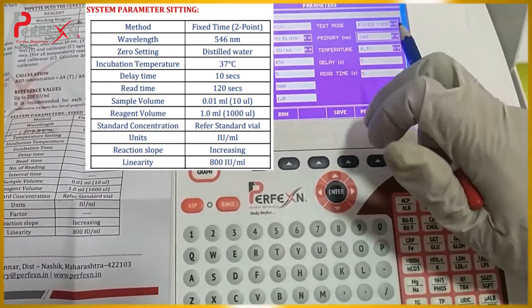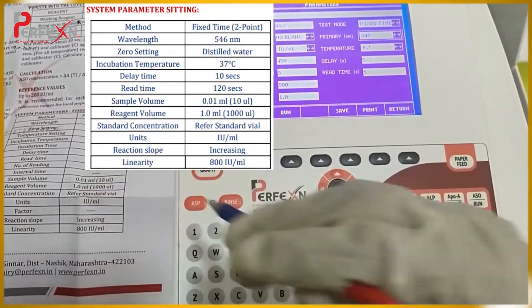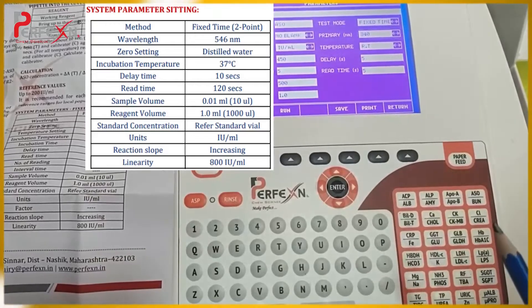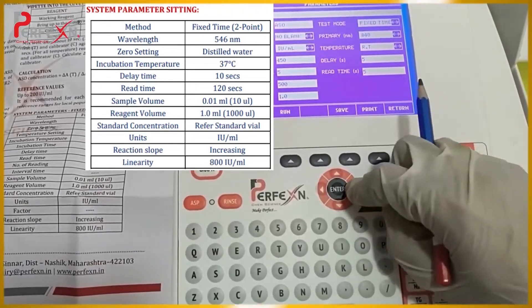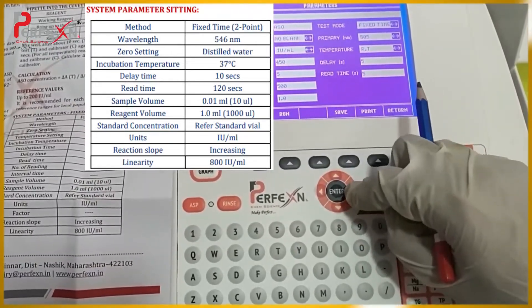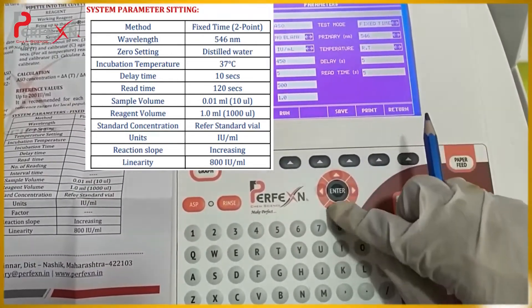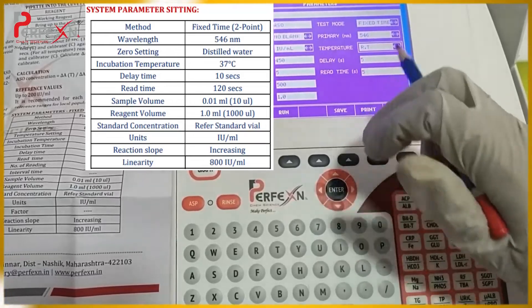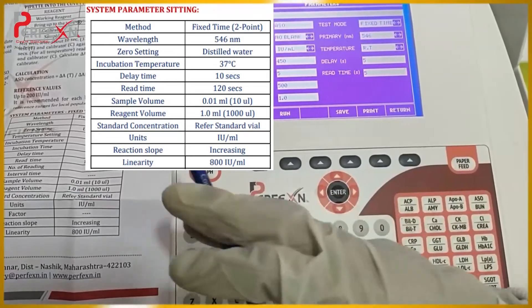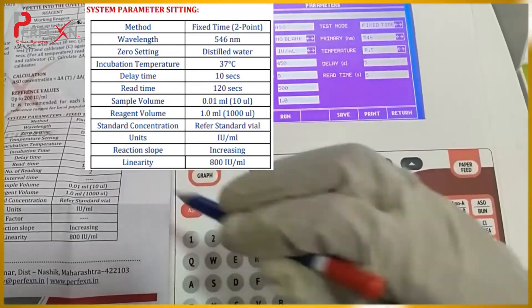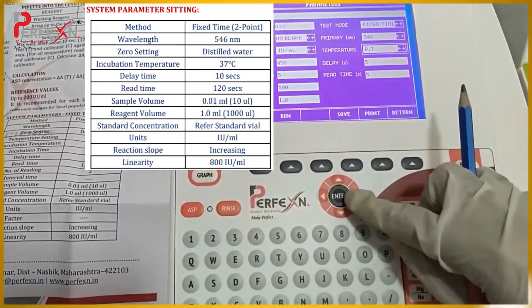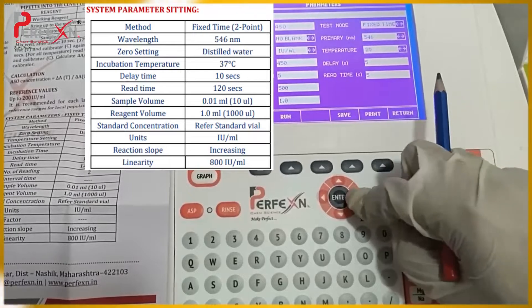For the primary wavelength, the literature has given 546 nm — enter 546. For the temperature, they have given 37 degrees Celsius, so enter 37 degrees Celsius.